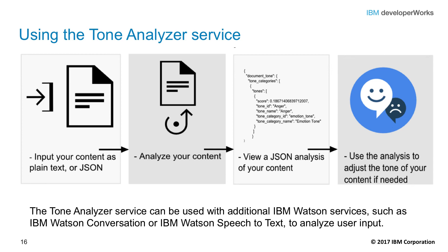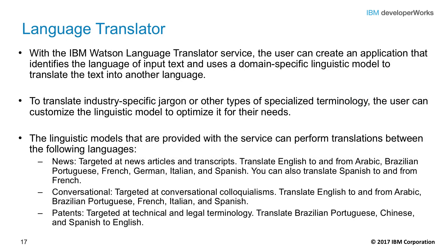The Language Translator Service supports a REST API to translate text from one language to another. Since text can take various forms based on use, the service includes a set of domain-specific linguistic models to improve translation accuracy. The service can also be trained to be more accurate with industry-specific jargon and terminology. Built-in domain models include news articles, conversational text, and patent language — patent domain language translation only goes to English. The Language Translator Service also includes a Language Identification API that can identify the language of input text across dozens of languages.